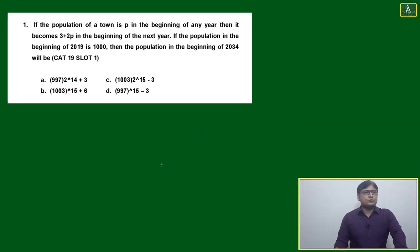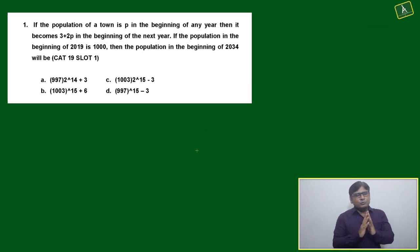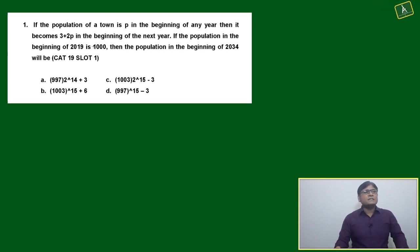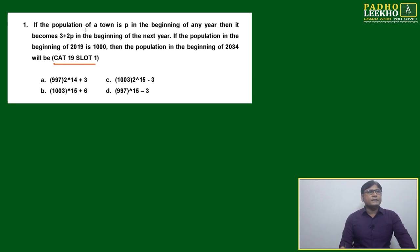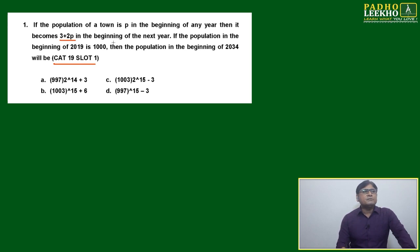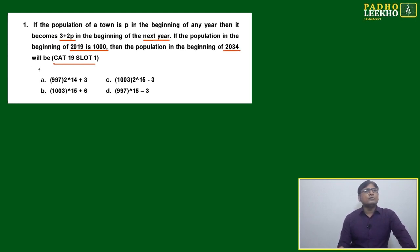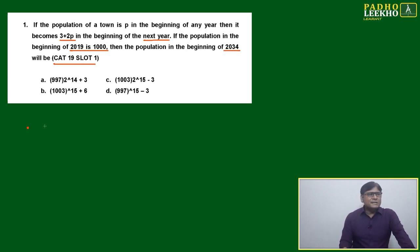Now let's look at question number one. This is from CAT 2019 paper slot 1. If the population of a town is P in the beginning of any year, then it becomes 3 plus 2P in the beginning of the next year. If the population in the beginning of 2019 is 1000, what will the population be in the beginning of 2034?